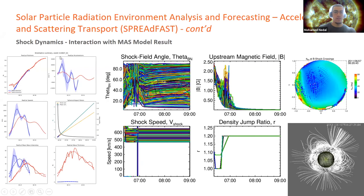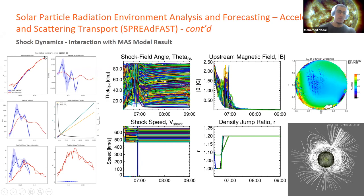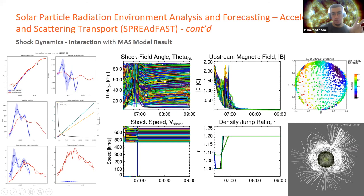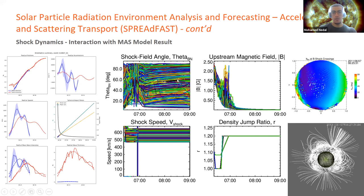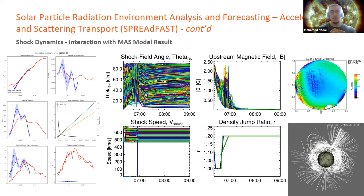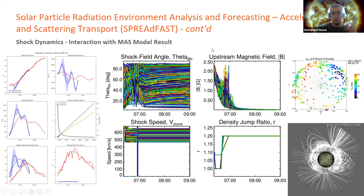On the left side we see an example of kinematics for the event on 7 June 2011. The red curve shows the lateral direction and the blue curve the radial direction, along with position of the shock wave, acceleration, speed, thickness, intensity, and aspect ratio extrapolated up to 30 arcseconds. In the middle figures, we have the theta angle, shock speed, density jump, and upstream magnetic field during shock propagation through the magnetic field lines obtained from MAS model MHD runs. The colored curves represent the magnetic field lines that crossed the shock surface.